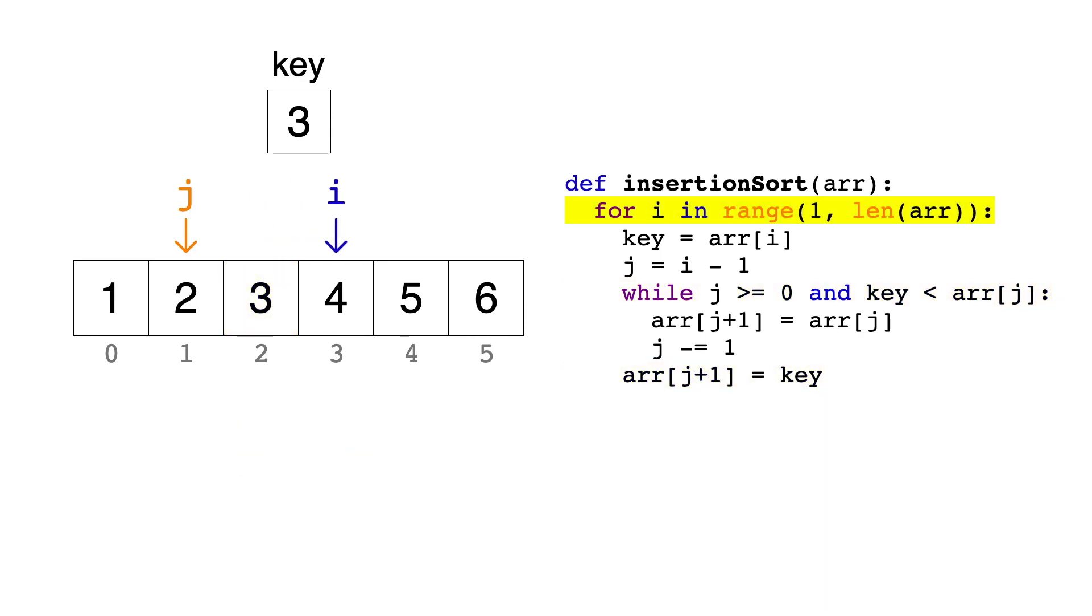You can see a pattern starting to form here. If the array is already sorted, the inner loop never executes, and we only iterate through the array once. This leads us to a really important point. On an array that's already sorted, insertion sort runs in O of n time, which is better than any other sorting algorithm. So if you know that an array is likely to be already sorted or nearly sorted, insertion sort is the best choice.